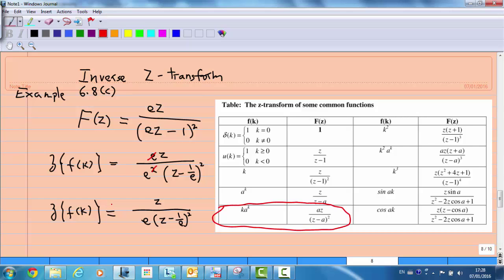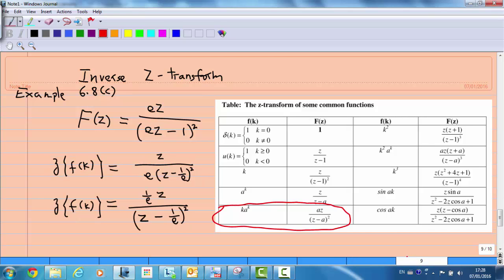And z/e times 1/(z - 1/e)² is equal to 1/e times z/(z - 1/e)². Now, when you do the comparison, you find that a is 1/e.